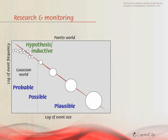In the domain of the probable and possible, I can use hypothesis-based research methods — focus groups, questionnaires — I can test my hypotheses, and I can use different groups of experts to create a comprehensive range of hypotheses that I can test.